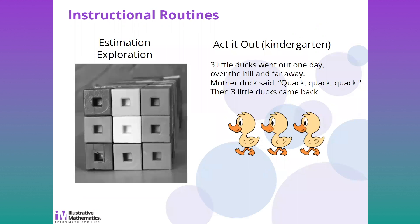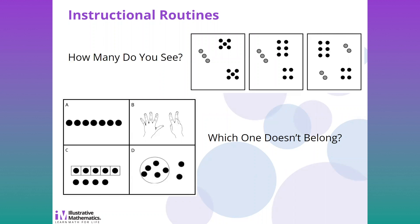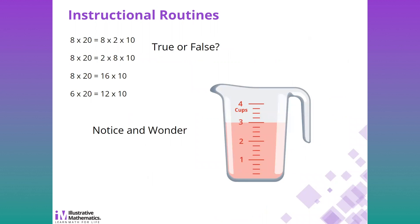Here are some of the routines found in K-5. There's estimation exploration. 'Act It Out' is a kindergarten routine where students are read a scenario and invited to act it out. In 'How Many Do You See?' students are given a visual of objects and asked how many they see and how they see them. We saw 'Which One Doesn't Belong' earlier. In 'True or False,' students consider if an equation is true or false and defend their answer. 'Notice and Wonder' asks students to list what they notice and wonder about a picture or diagram.